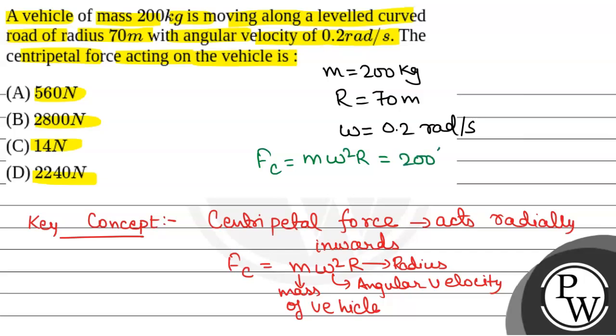multiplied by 0.2 square into 70 meter, so that will be equal to 560 newton. The centripetal force will be equal to 560 newton which is option A.